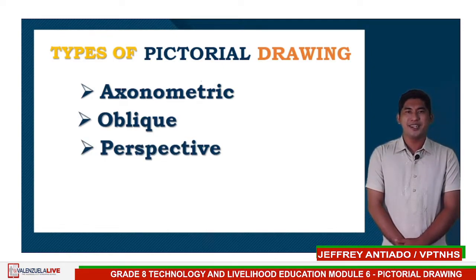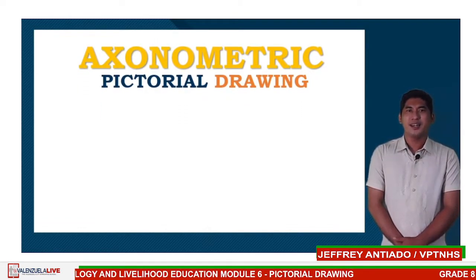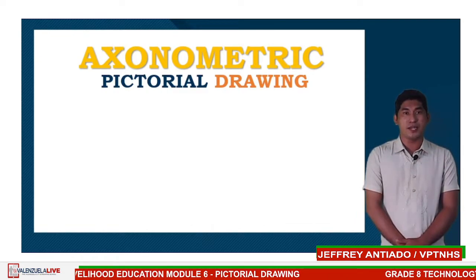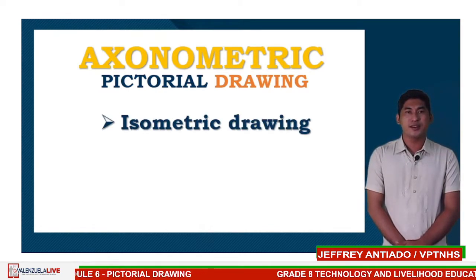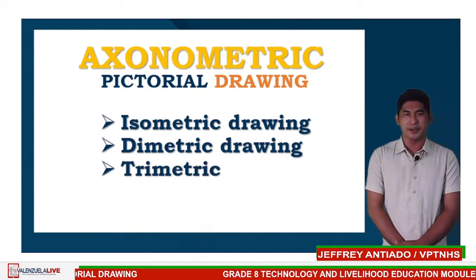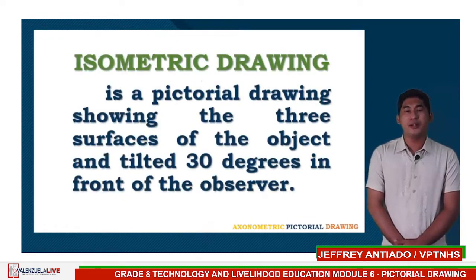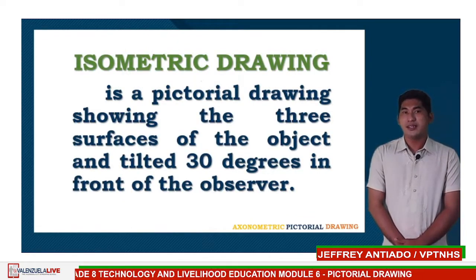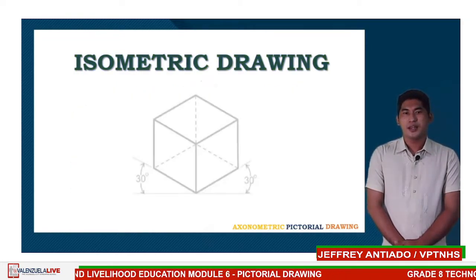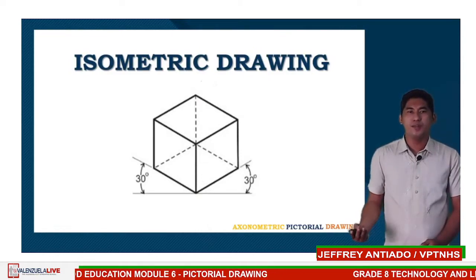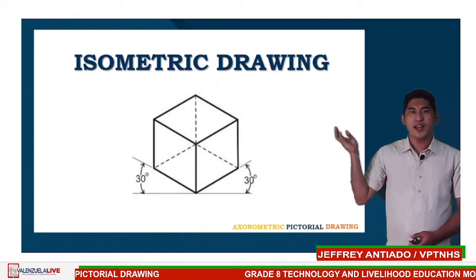Let's start with axonometric drawing. An axonometric drawing focuses on the axis of an object. There are three types of axonometric drawing: isometric, dimetric, and trimetric. Isometric drawing is a pictorial drawing showing the three surfaces of the object, tilted 30 degrees in front of the observer. In the drawing, you will see a cube showing us the three surfaces: the top, the left, and the right.